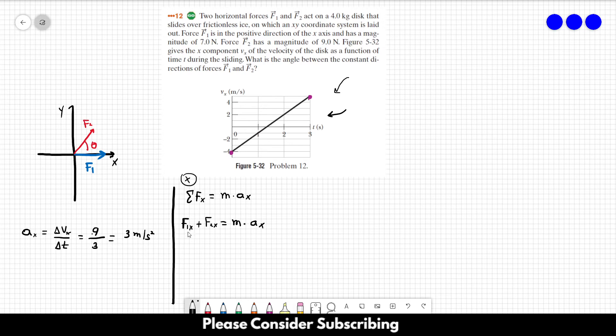The x component of F1 is F1 itself because it points to the x direction. The x component of F2 is F2 times the cosine of the angle, and this is equal to mass times acceleration.